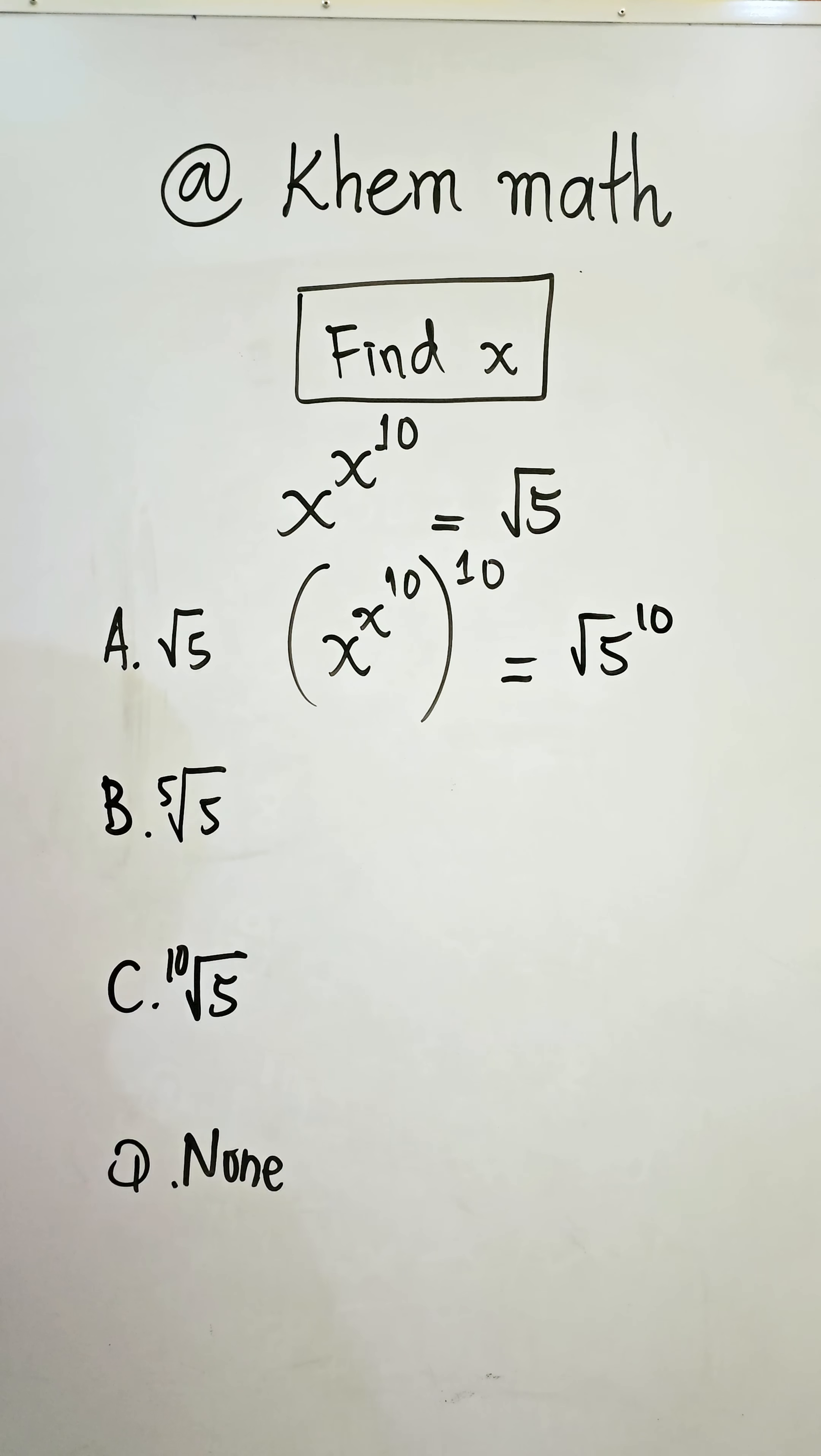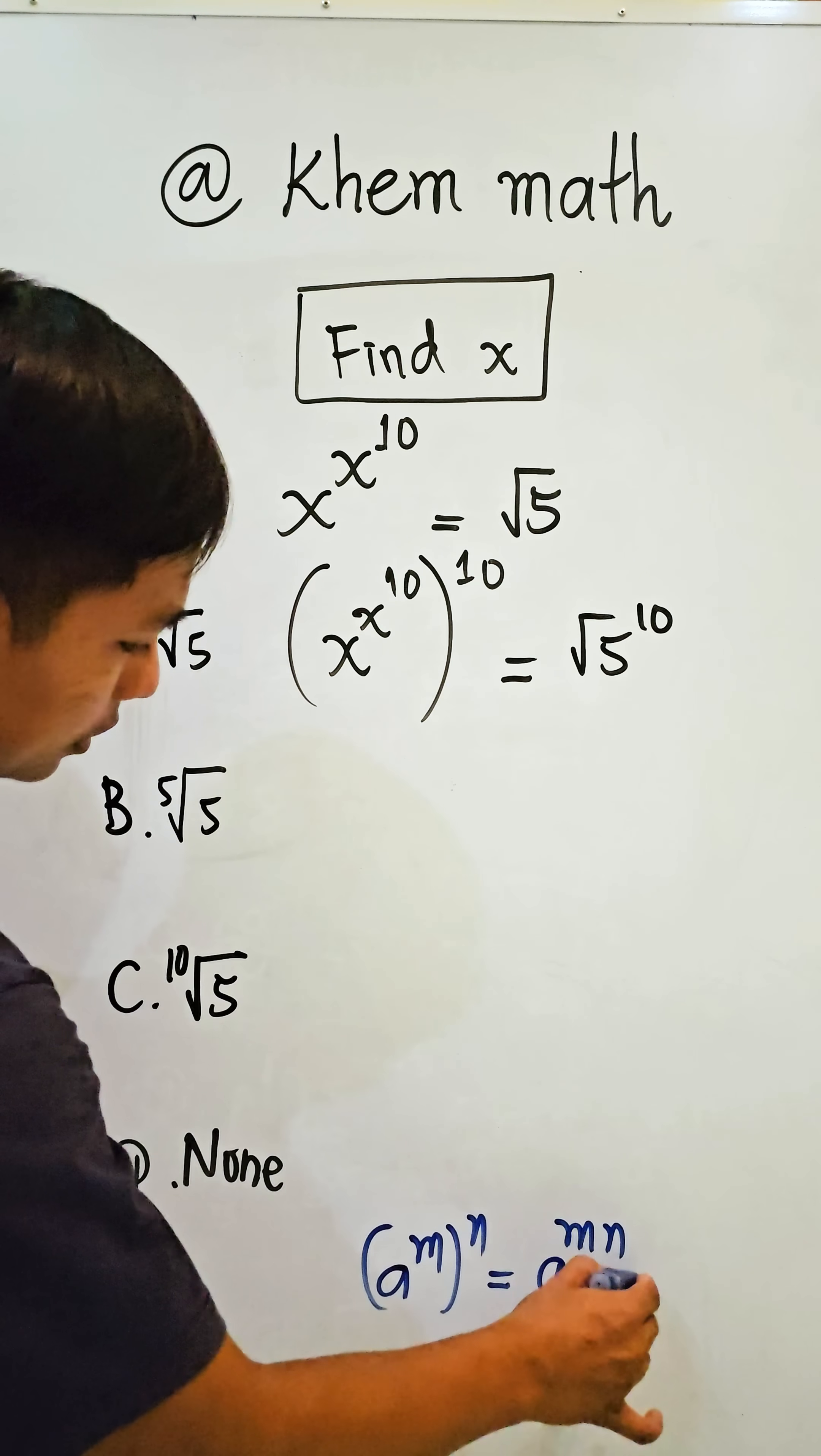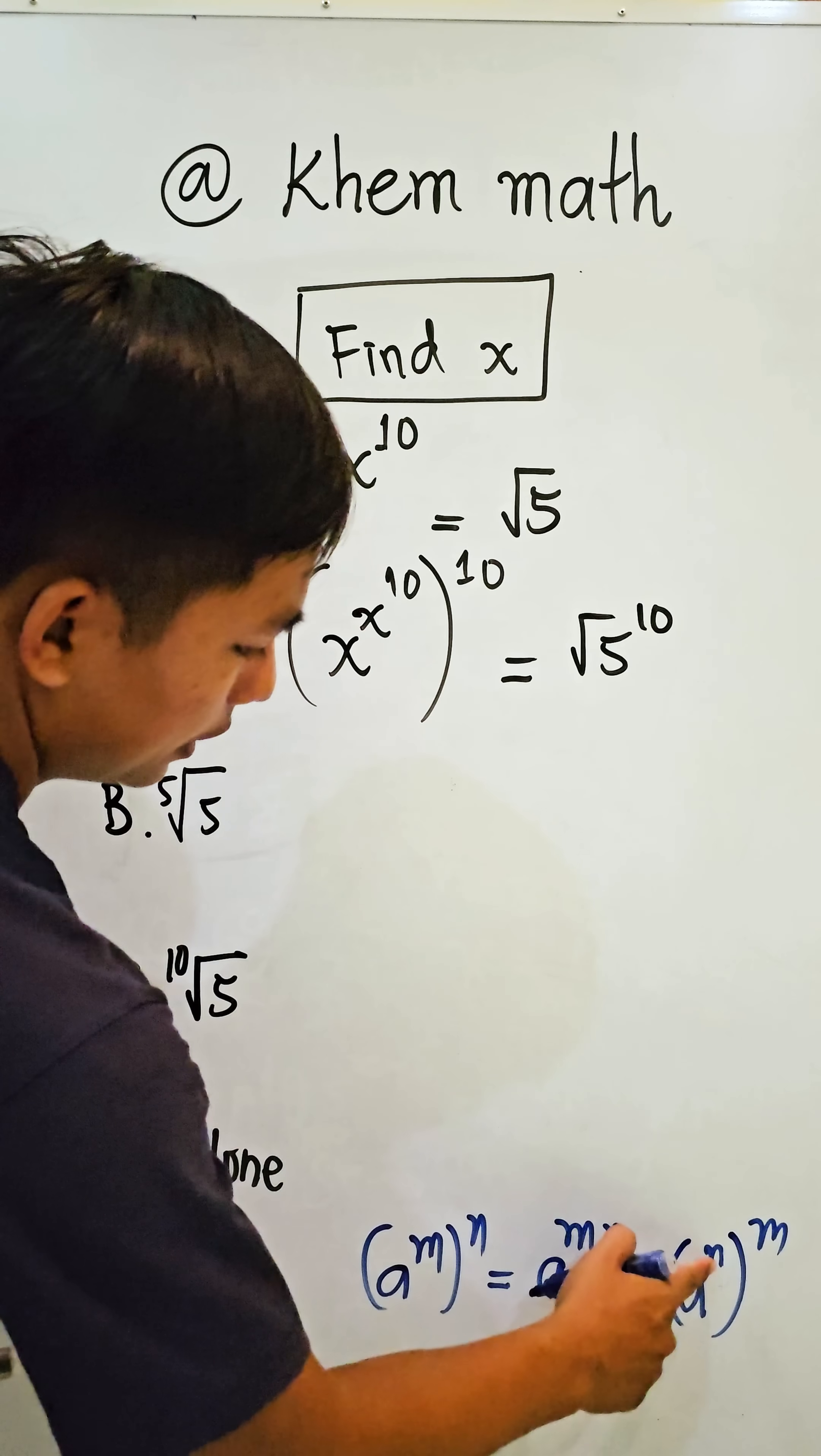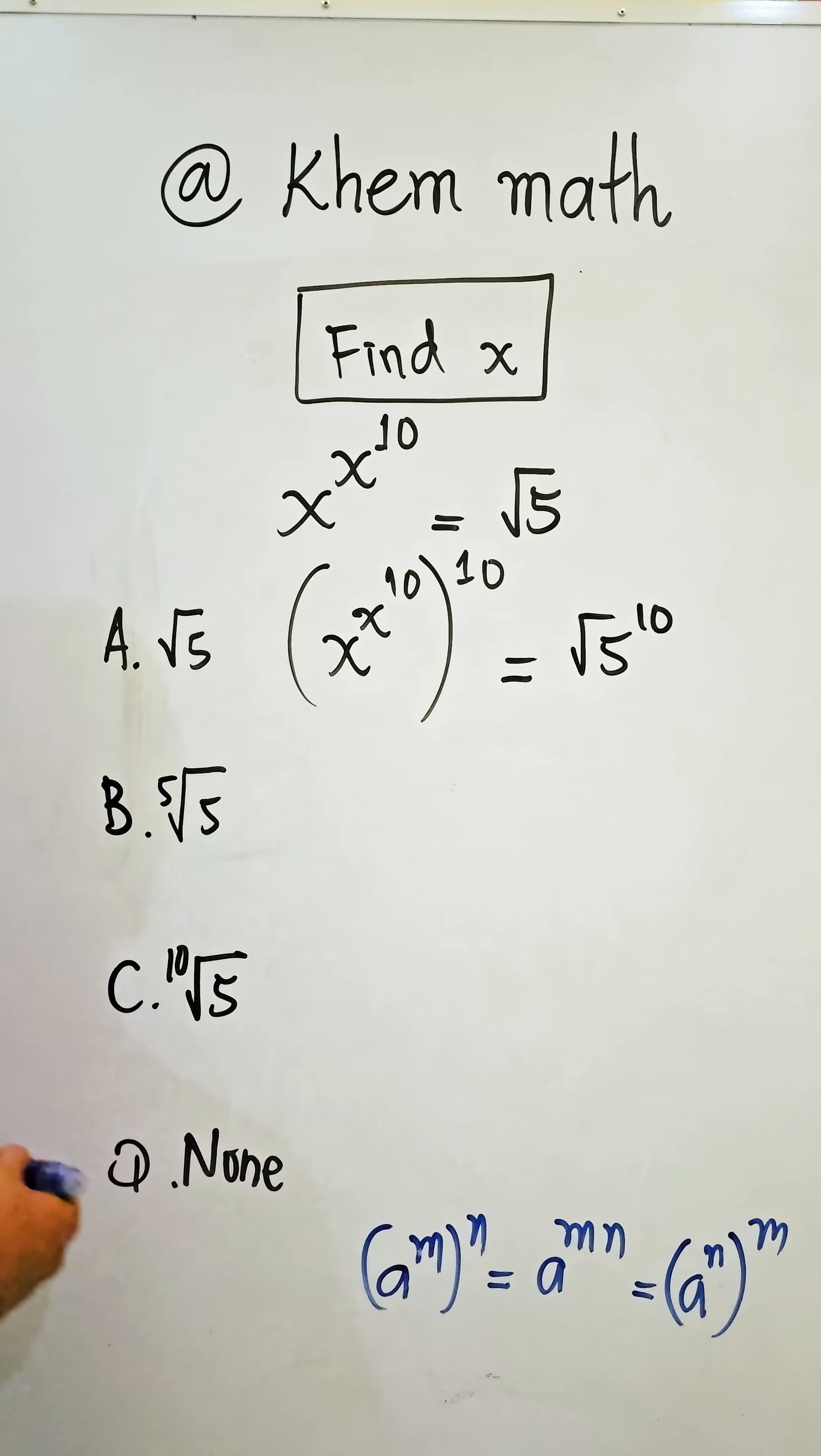We can use the formula: if a to the power of m, all raised to the power of n, equals a to the power of m times n. So it's equal to a to the power of n times m.